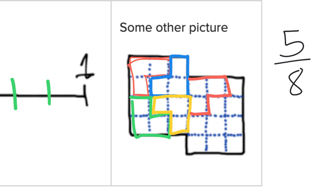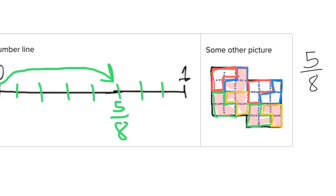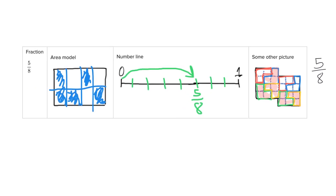I mark out another group, and another, and a green one, and finally a yellow one — giving eight groups of three squares. To indicate five-eighths, I just shade in any five of them: this one, this one, this one, this one, and this one. There's my five-eighths, because I cut it into eight pieces and shaded in five. That's my area model.